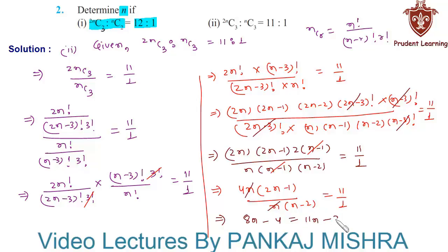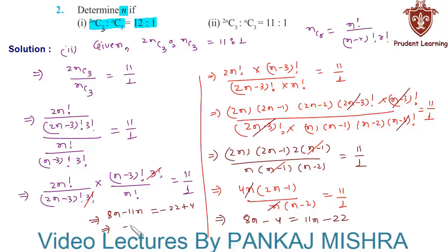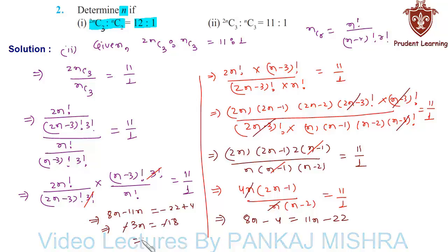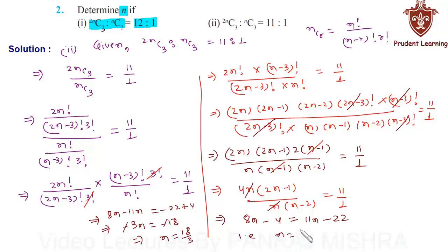So we have 8n minus 4 is equal to 11n minus 22. Bringing 11n to the left hand side we have 8n minus 11n, and taking minus 4 to the right hand side we have minus 22 plus 4. This gives us minus 3n is equal to minus 18. Cancelling the negative sign we have n is equal to 18 upon 3, that is n is equal to 6. Hence the value of n is equal to 6 for the second section. This completes our solution.